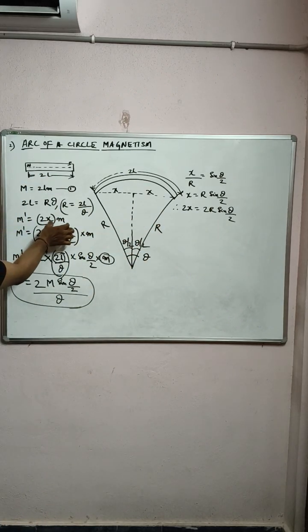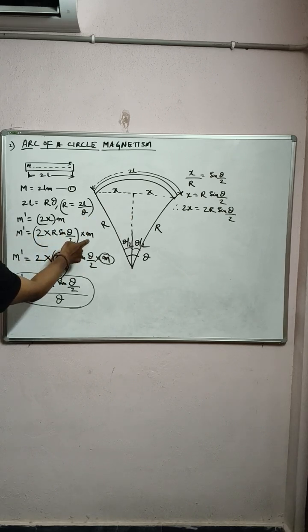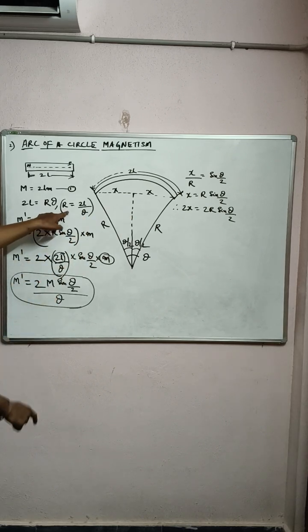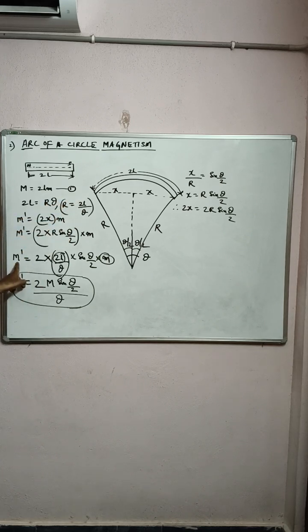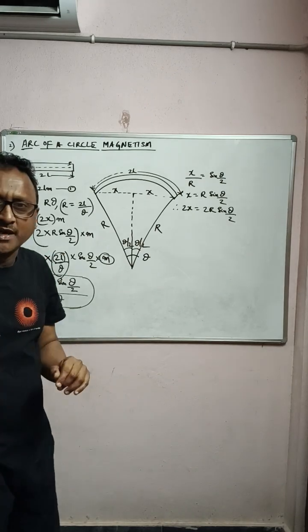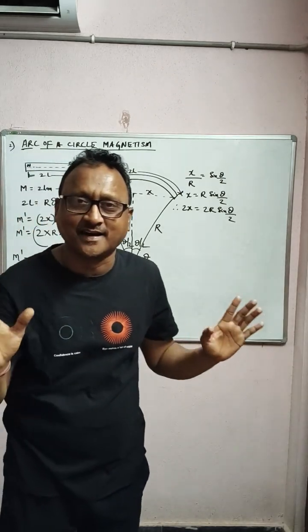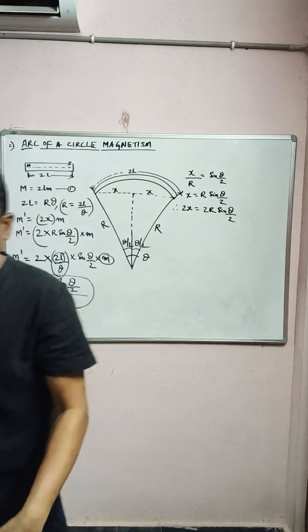Substituting r = 2l/θ into the expression, the new magnetic moment becomes m' = 2m·sin(θ/2) divided by θ. Simple mathematics!